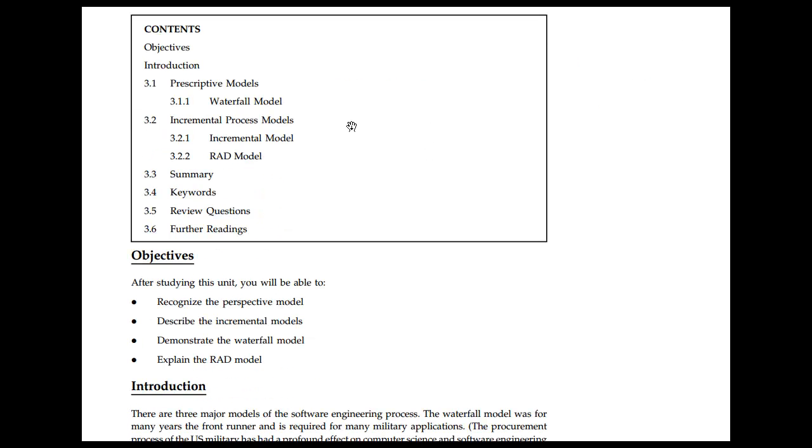In the process model, just observe this word 'process'. It was talked about in the last video that process is how we are going to do it - it is the initiation of things. We are deciding things. So in the process model you have prescriptive model which is the waterfall model, and you have incremental process model, rapid application development. These are the two process models.